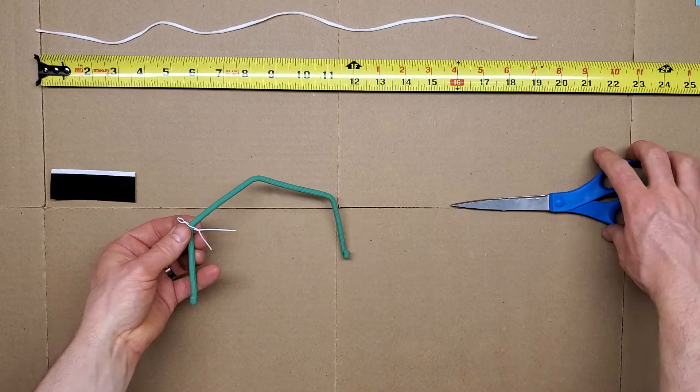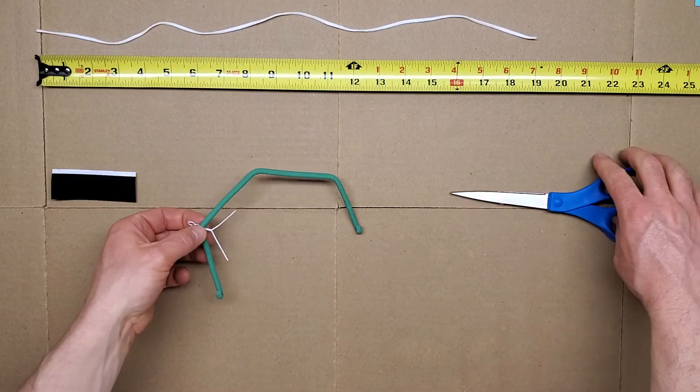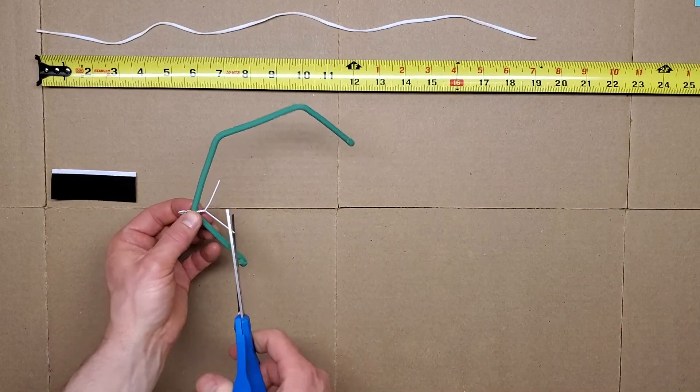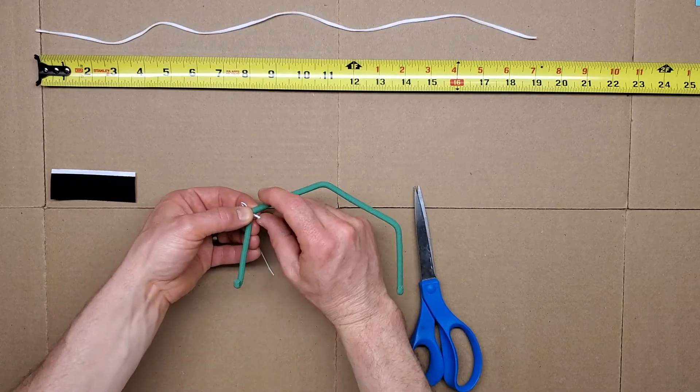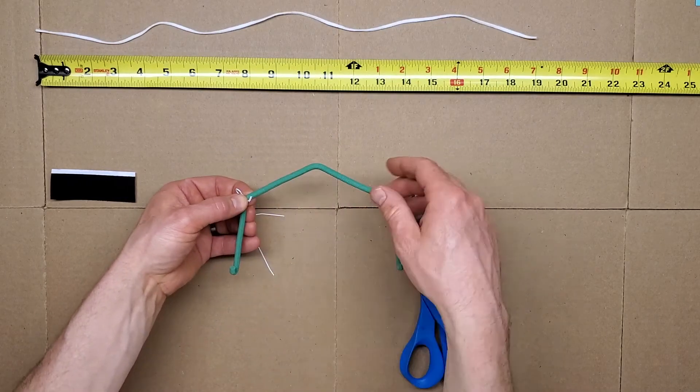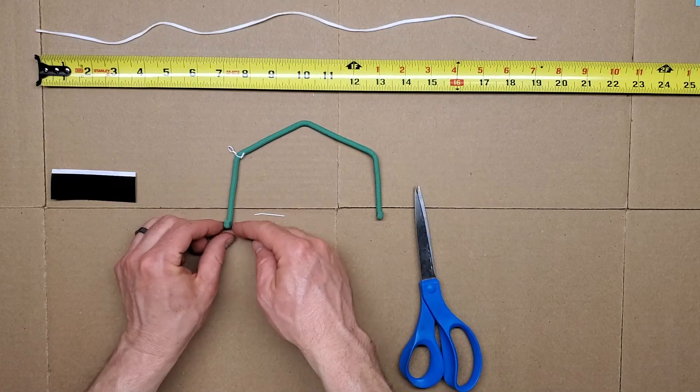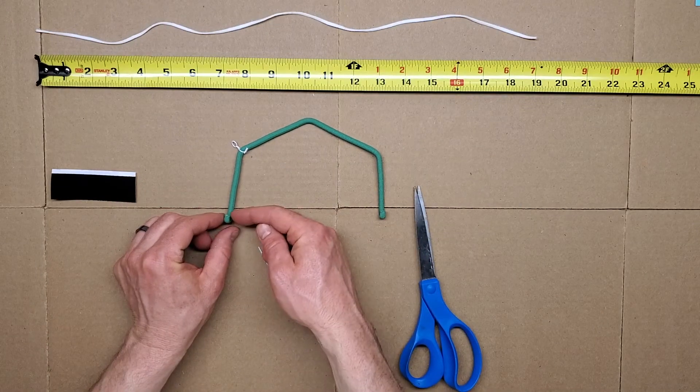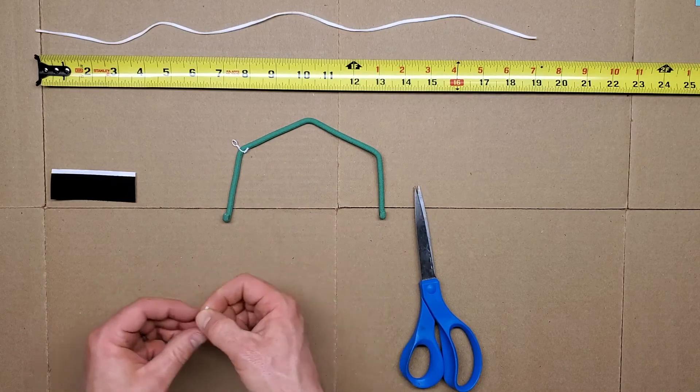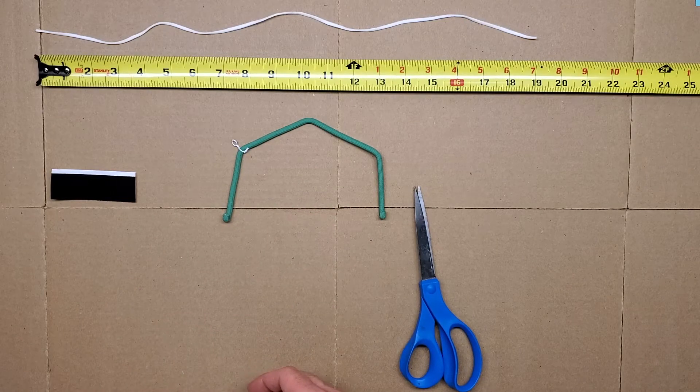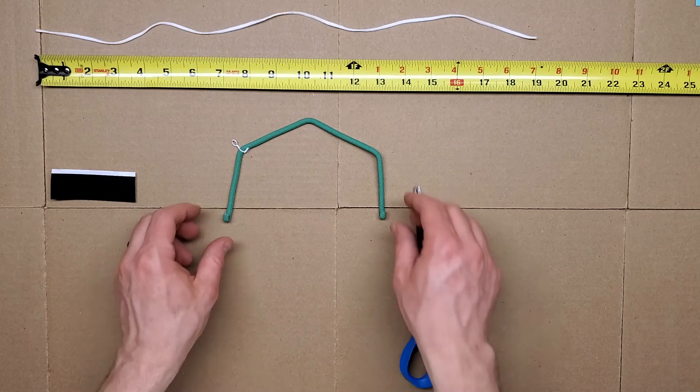And then I twist it onto the bend like that. Then I use the scissors to cut that. And then I bend this up. This part where the loop comes up will be the front. I want that on the front so it doesn't poke the person wearing it.